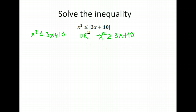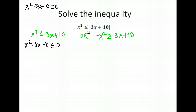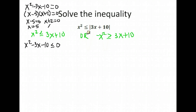We solve both quadratic problems by getting zero on one side. For the first one, subtract 3x and subtract 10 from both sides. Then we check if it factors: are there factors of negative 10 that add to negative 3? Yes — negative 5 and positive 2 (since −5 × 2 = −10 and −5 + 2 = −3). Setting each factor equal to zero gives x = 5 and x = −2.